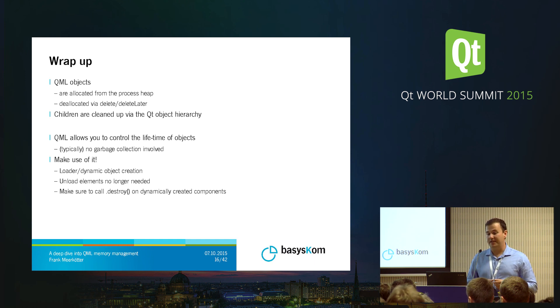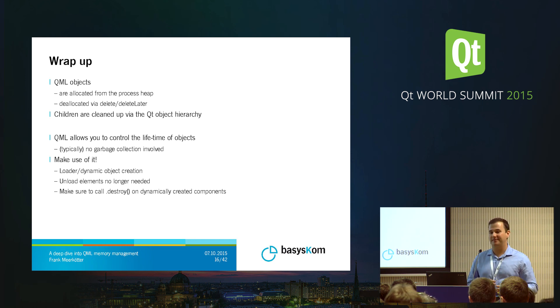To wrap up the QML side: QML objects are allocated from the process heap and are deallocated with delete or deleteLater, with children cleaned up via the QObject hierarchy. The essence is that QML allows you to actually control the lifetime of your objects — there's typically no garbage collection involved. So make use of it: use a dynamic loader and dynamic object creation from the JavaScript side to load and unload elements you no longer need. Also, if using the JavaScript API, make sure to actually destroy the object and not just null the reference.